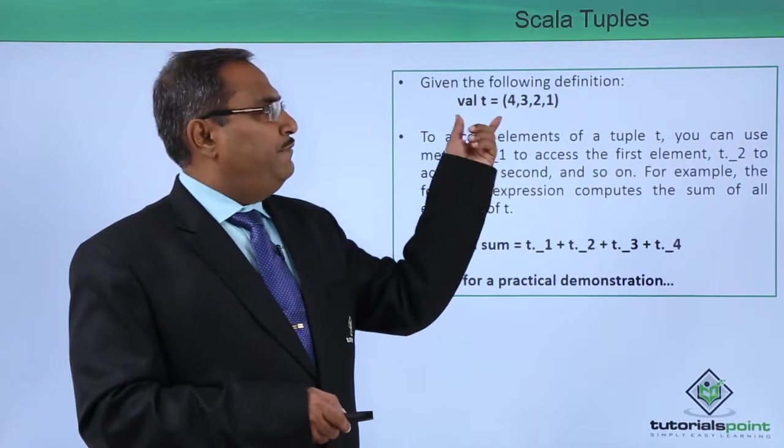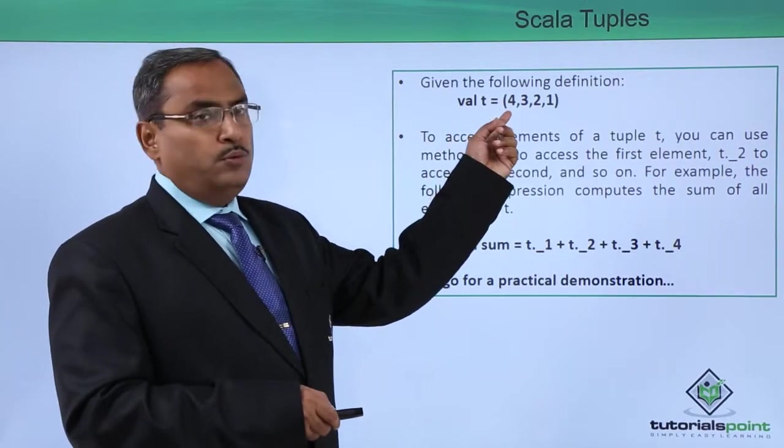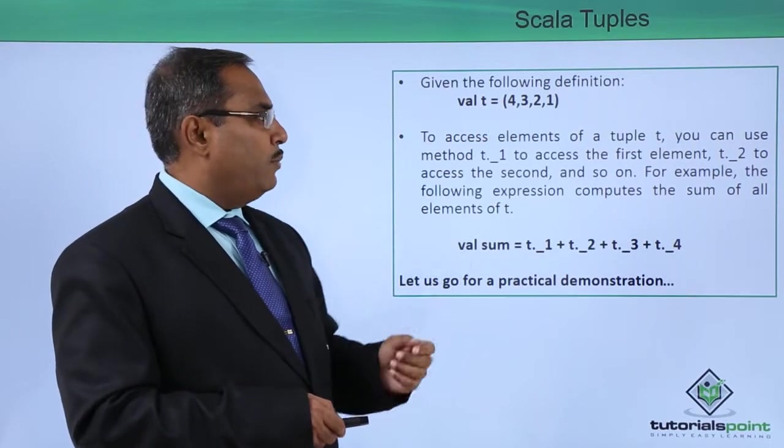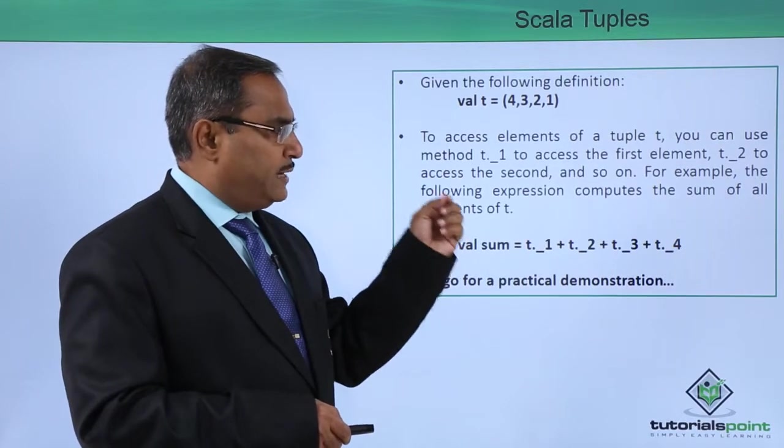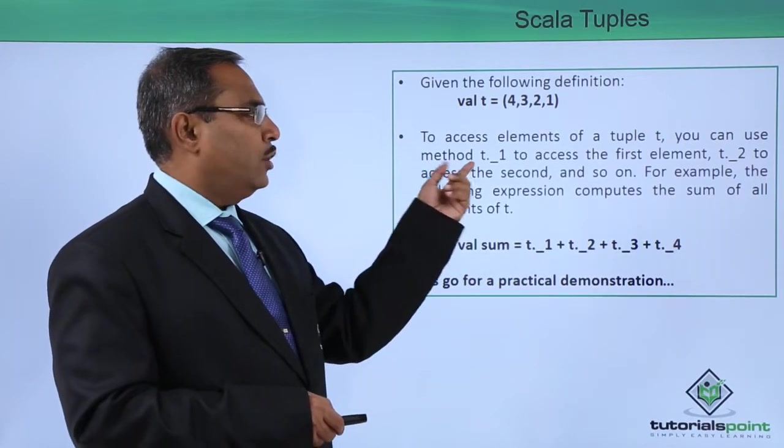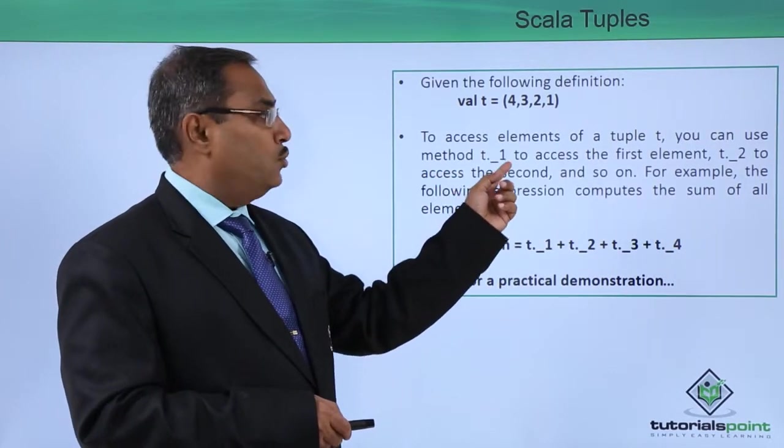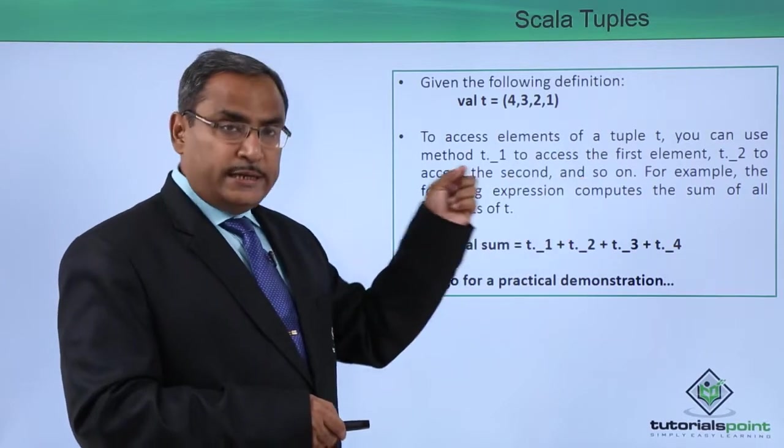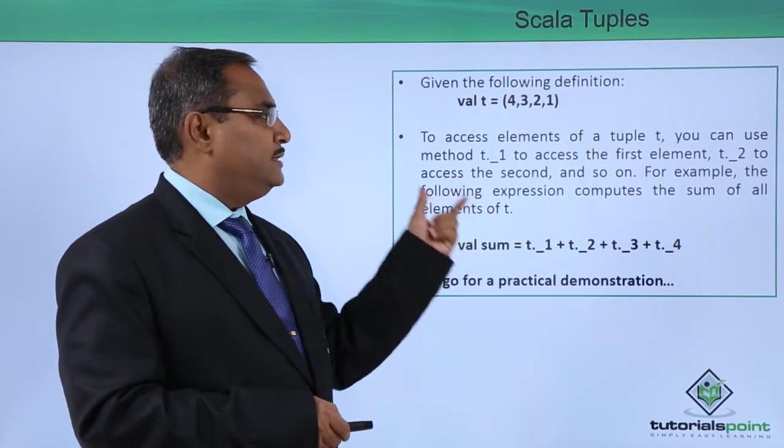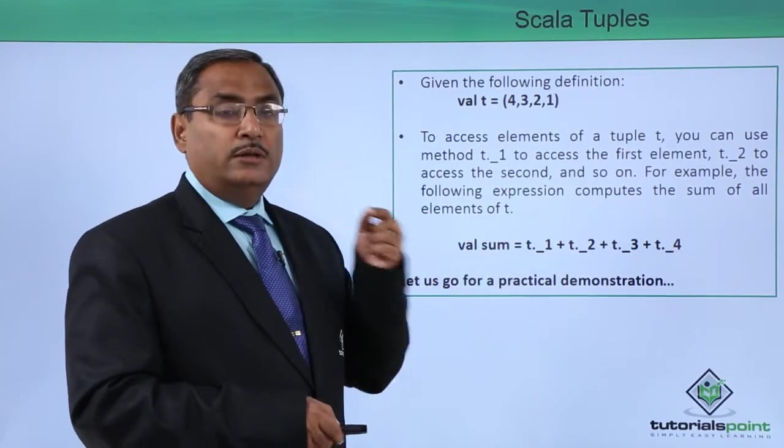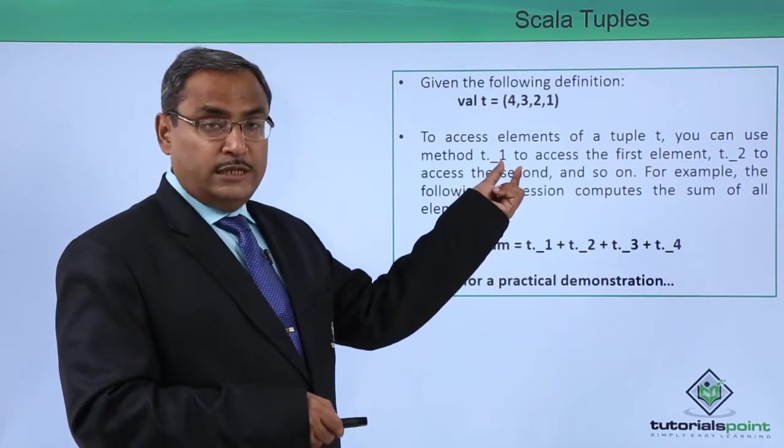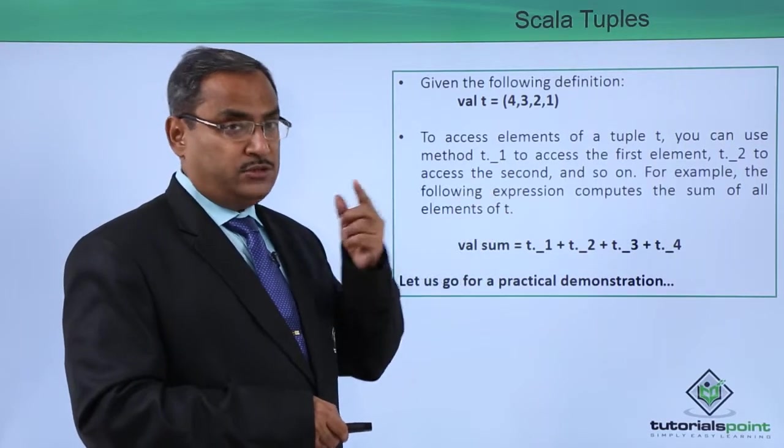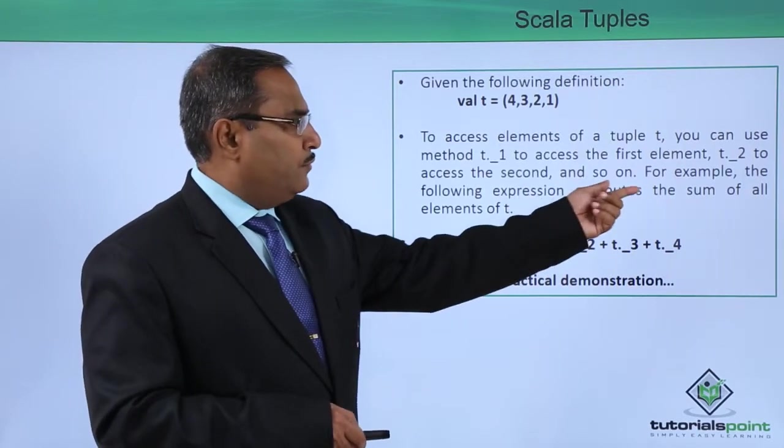Given the following definition: val t = (4, 3, 2, 1). To access elements of tuple t, you can use method t._1 to access the first element, t._2 to access the second element, and so on. Note that the element numbering is 1-indexed, not starting from 0, but starting from 1.